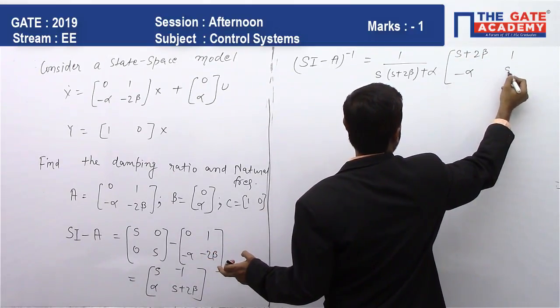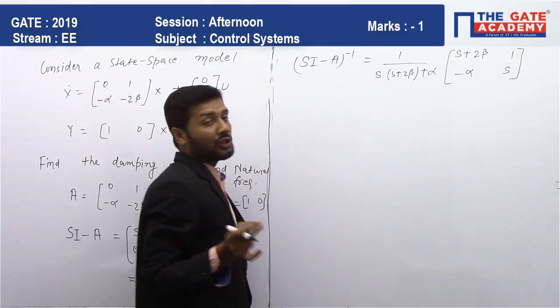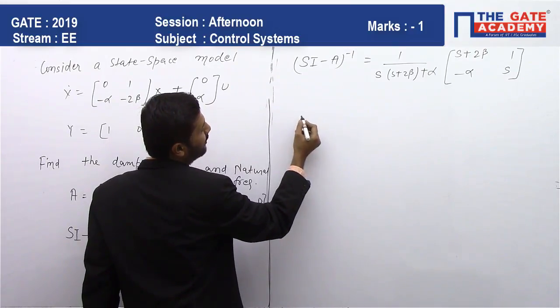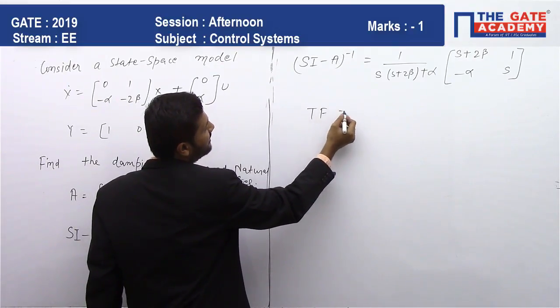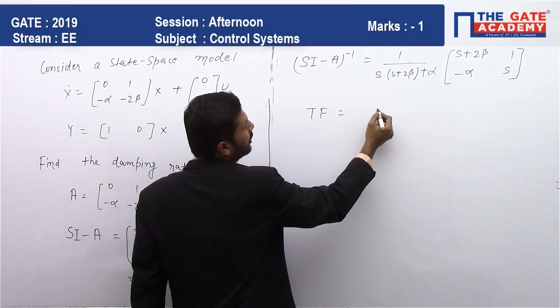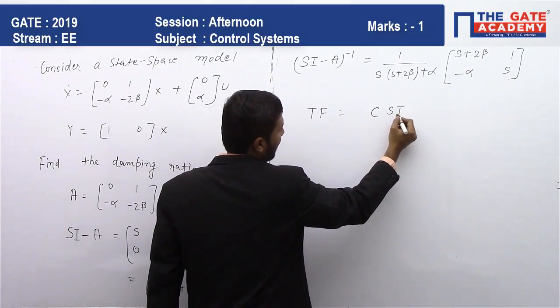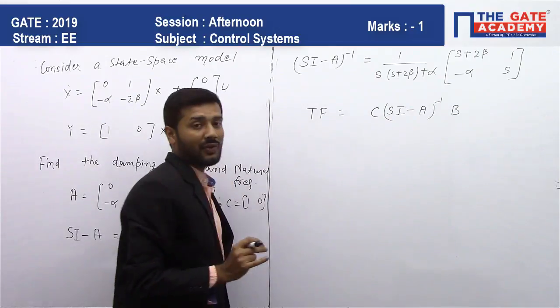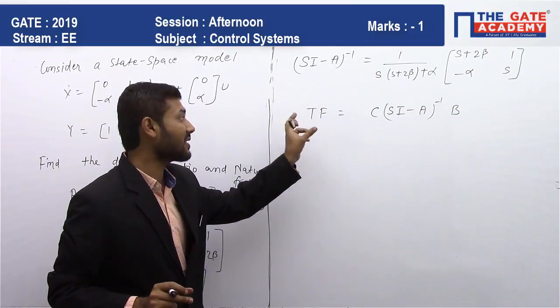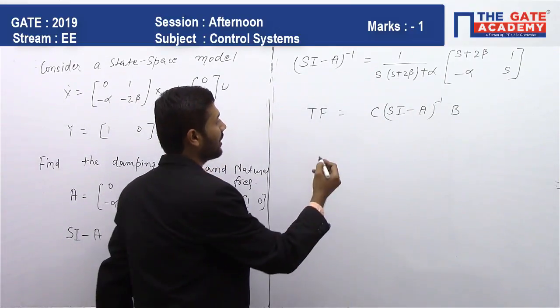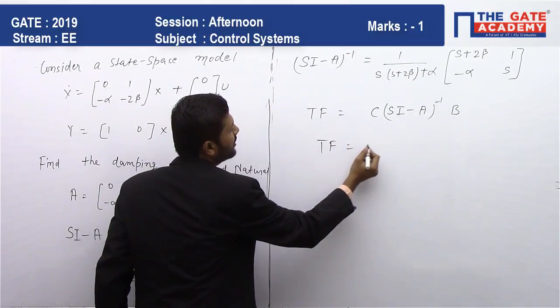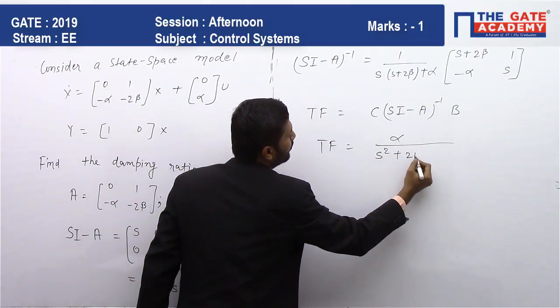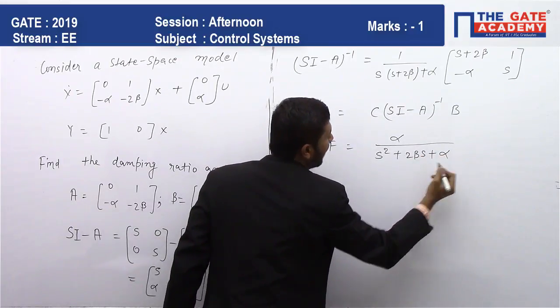To find the transfer function of the system, we will do C times SI minus A inverse times B. By just putting the value of C and B, we will get the transfer function for the system.